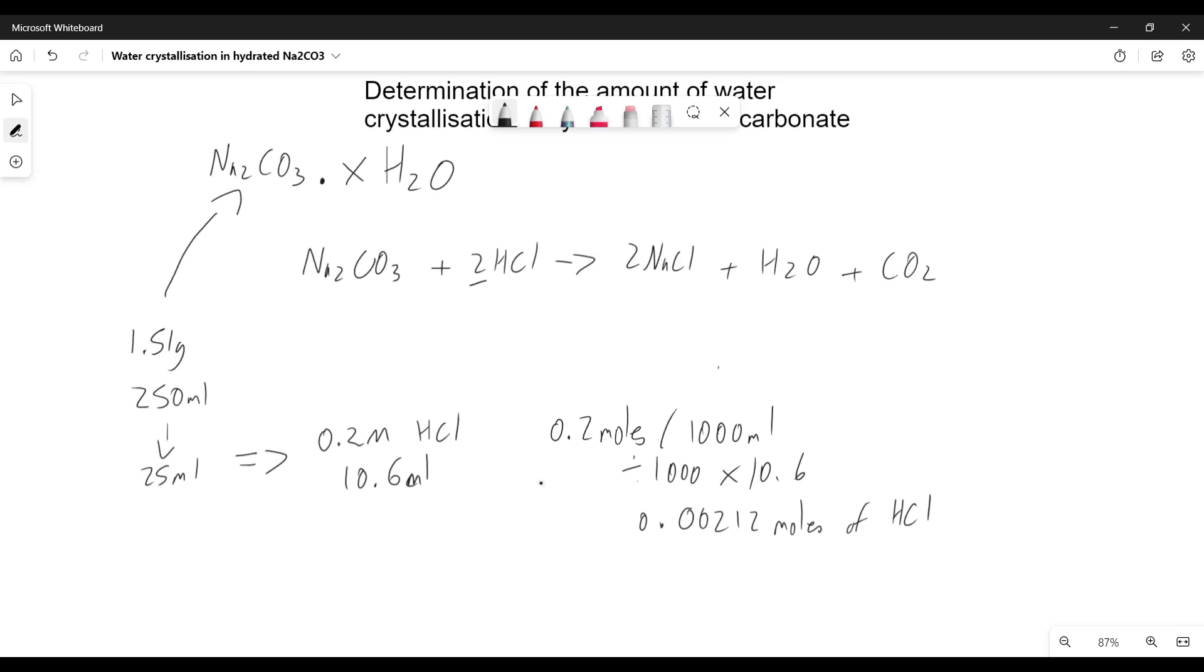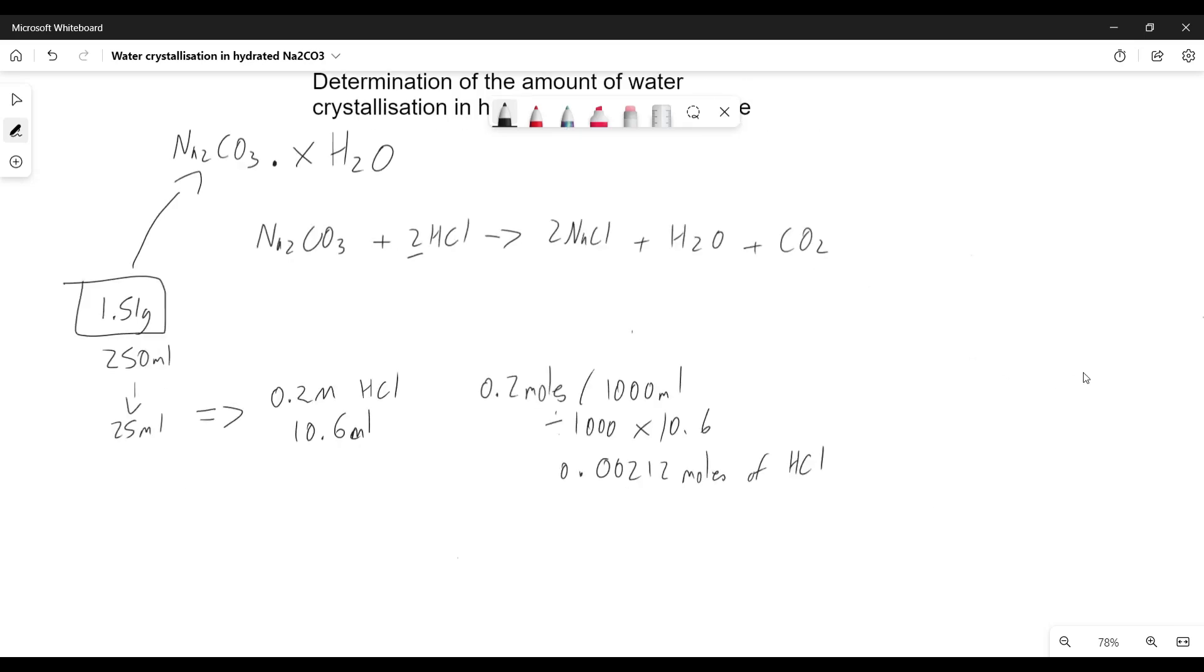If we have 0.00212 moles of HCl in our reaction, we have half of that in sodium carbonate, which would be 0.00106 moles. And that's our number of moles of sodium carbonate.